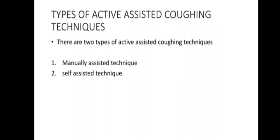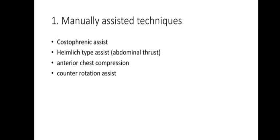Types of Active Assisted Cuffing Techniques: There are two types — Manual Assisted Techniques and Self-Assisted Techniques. Manual Assisted Cuffing Techniques include: Costo-phrenic Assist, Heimlich-type Assisted Abdominal Thrust, Anterior Chest Compression, and Counter Rotation Costo-phrenic Assist.